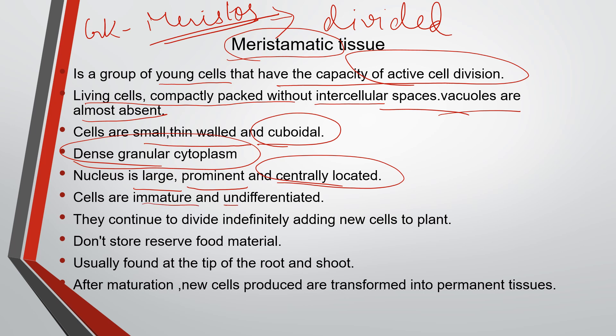Cells are immature and undifferentiated. These meristematic cells continue to divide indefinitely, adding new cells to the plant over a long period of time. They do not store or reserve food material. They are usually found at the tip of the root or shoot, as roots grow deep into the soil and shoots grow upwards. They are also found at the lateral sides.